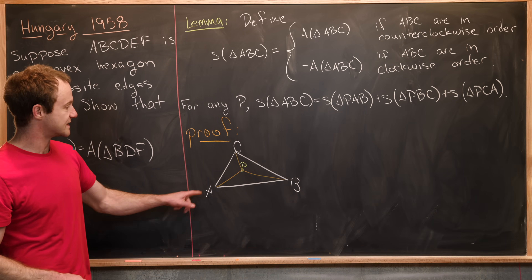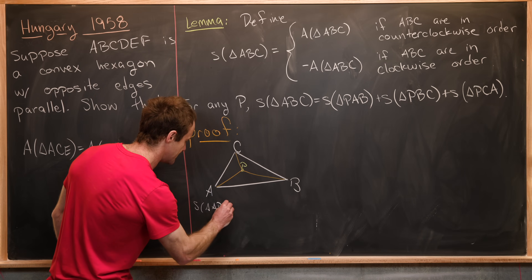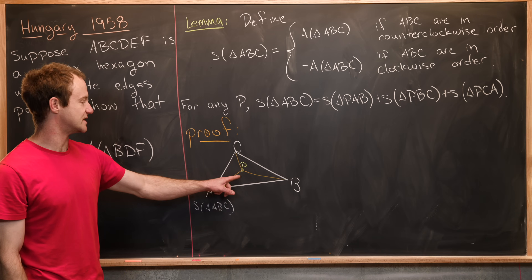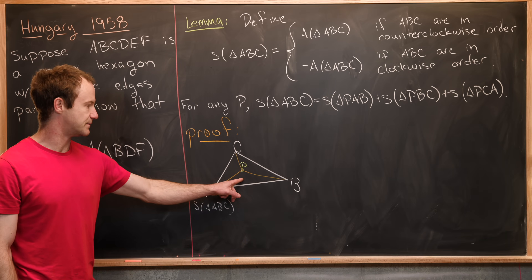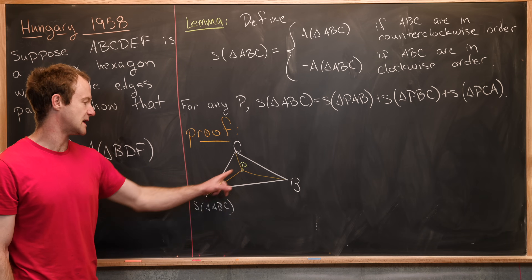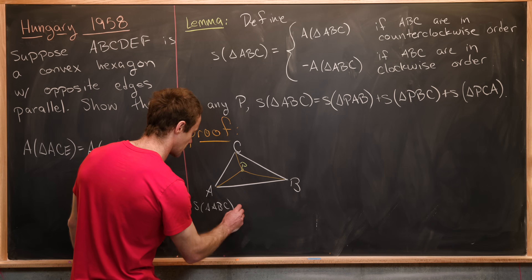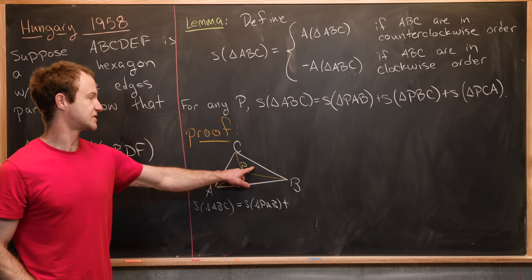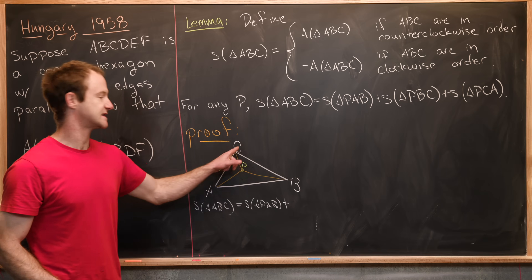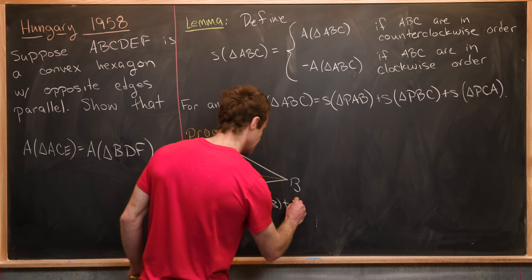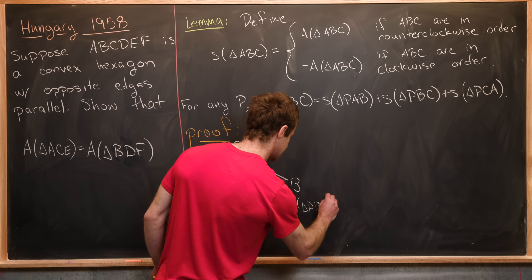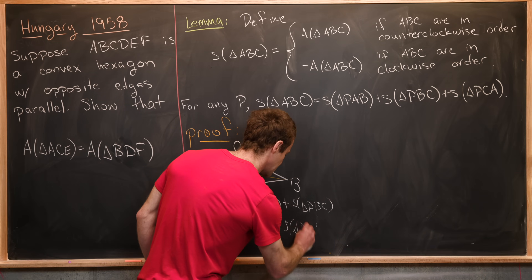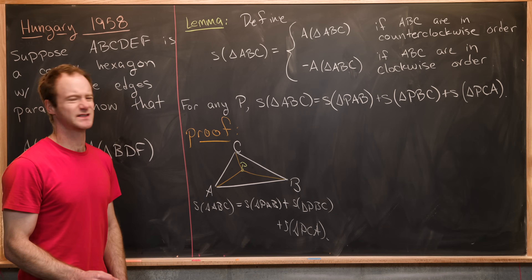S of triangle ABC is the area of the entire triangle, and this entire triangle is partitioned into three sub-triangles. The bottom sub-triangle is S(PAB) because PAB are in counterclockwise order, then we add S of triangle PBC, also counterclockwise, and finally S of triangle PCA. That's all there is to this first case.